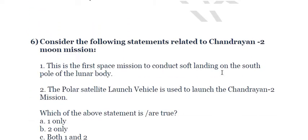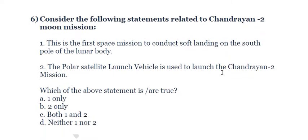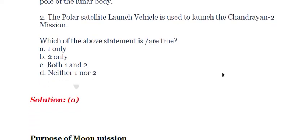The sixth question: consider the following statements related to Chandrayaan-2. First, this is the first space mission to conduct a soft landing on the south pole of the lunar body. Second, the Polar Satellite Launch Vehicle is used to launch the Chandrayaan-2 mission. The first statement is correct, but the second is not — GSLV Mk3 is used for the launch of Chandrayaan-2, because Chandrayaan-2 is quite heavy at approximately 3,700 kg, making it difficult for PSLV to carry it. The answer is A.